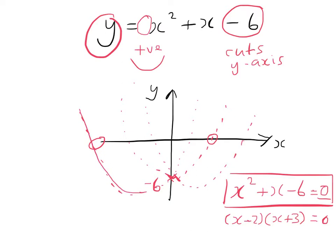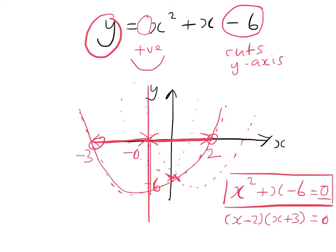So this is the scenario we're looking at — the roots are at x equals 2 and x equals minus 3, so the line of symmetry is slightly to the left of the y-axis. Because it's a symmetrical curve, the minimum point is halfway between minus 3 and plus 2, which is minus 0.5. Putting x equals minus 0.5 into the equation gives us the coordinates of the minimum point: minus 0.5, minus 6.25.